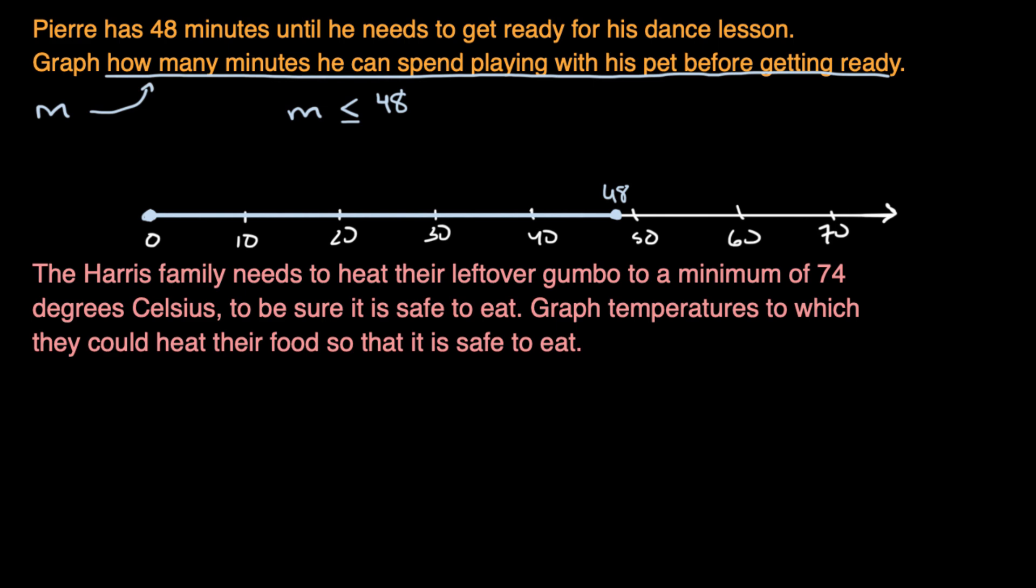All right. Well, let's imagine, maybe we'll say T for temperature. So T for temperature is the temperature that they heat their gumbo to. And now let's do a number line. Before I even do a number line, let me express it as some kind of an inequality. So they need to a minimum of 74 degrees Celsius. So that means it has to be at least 74 or higher.